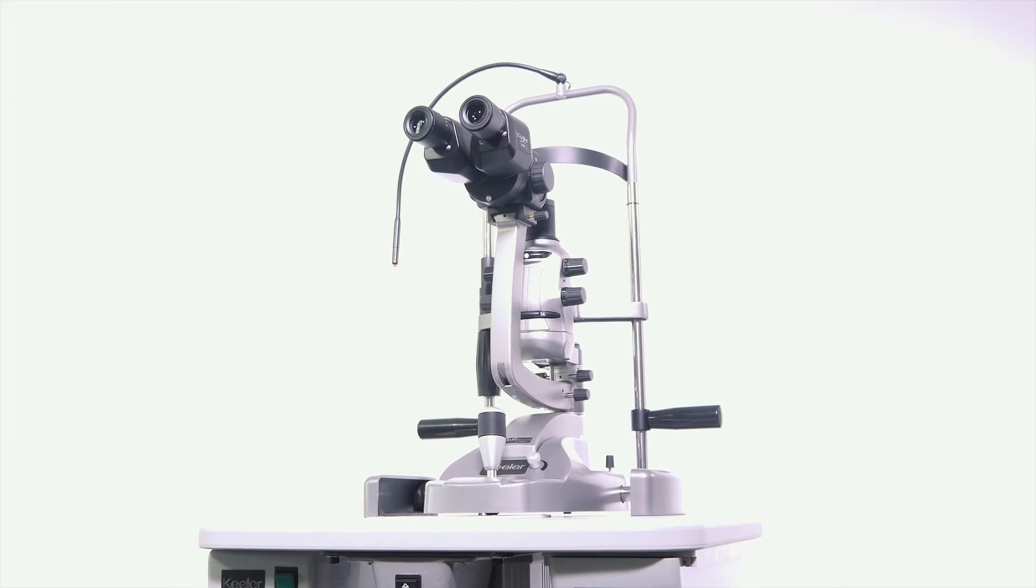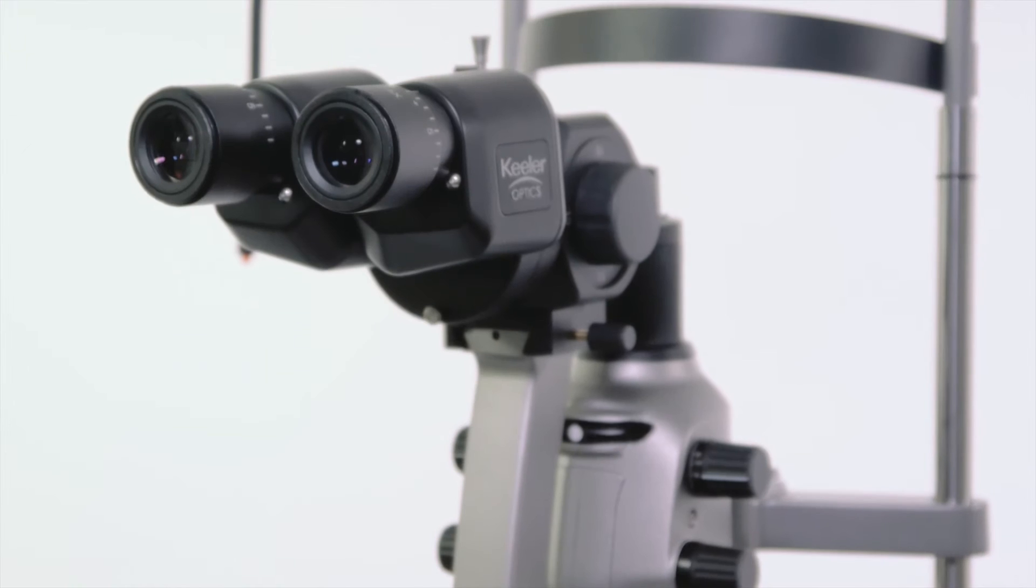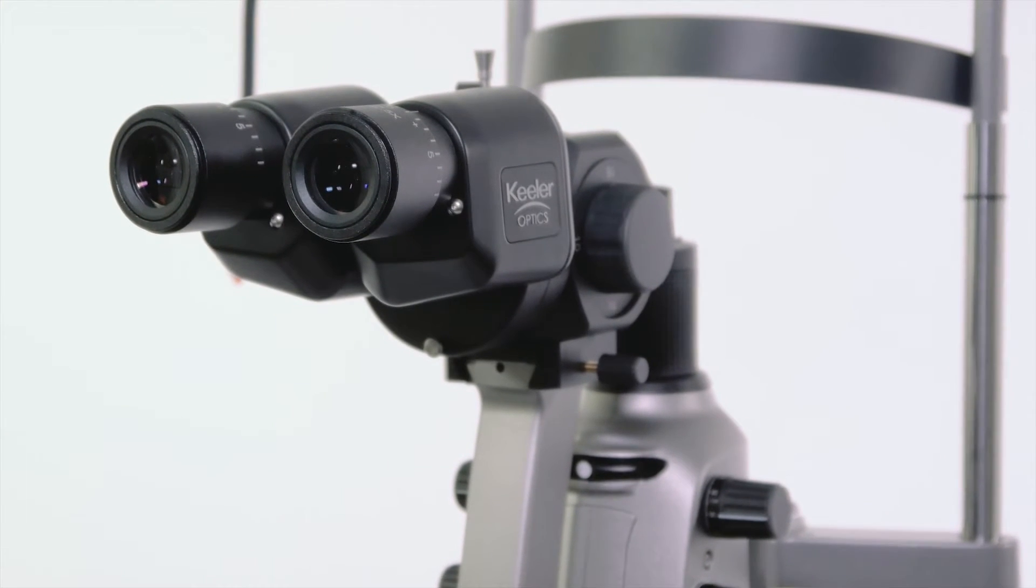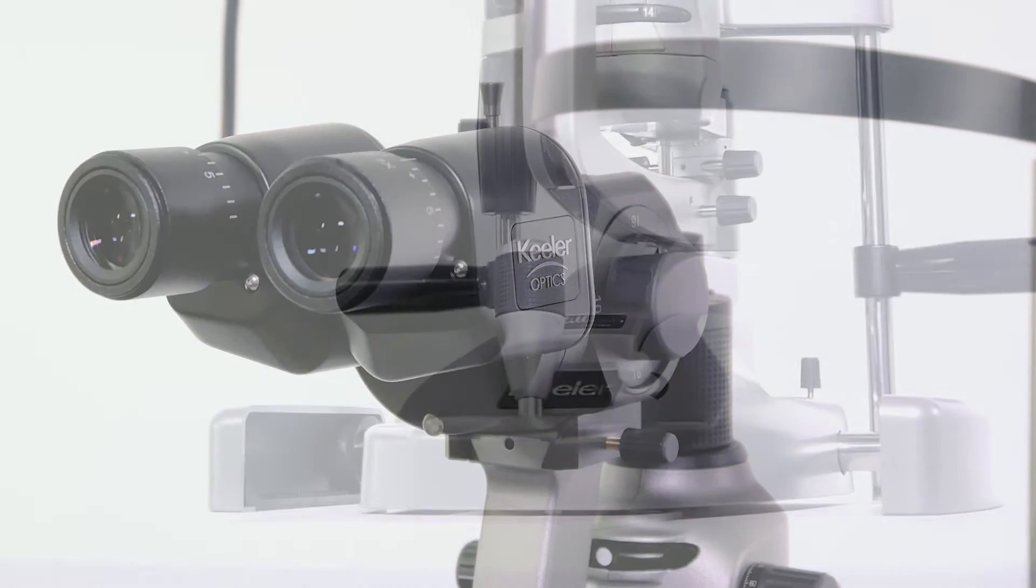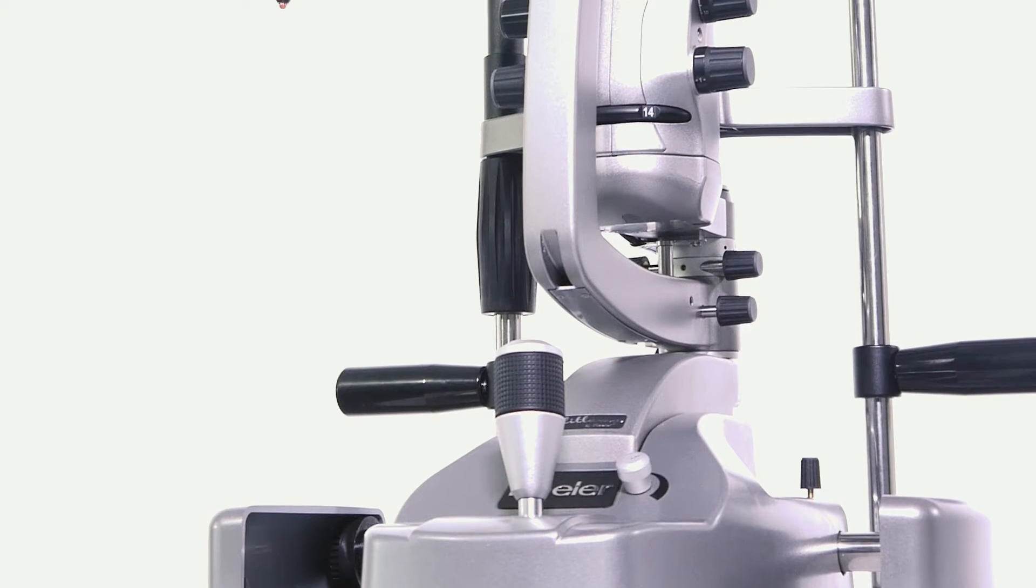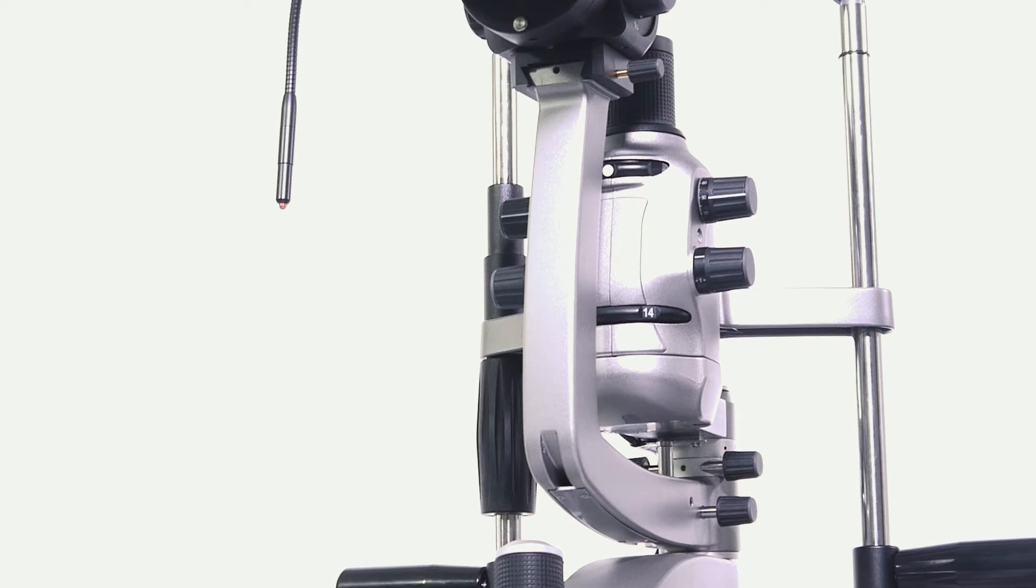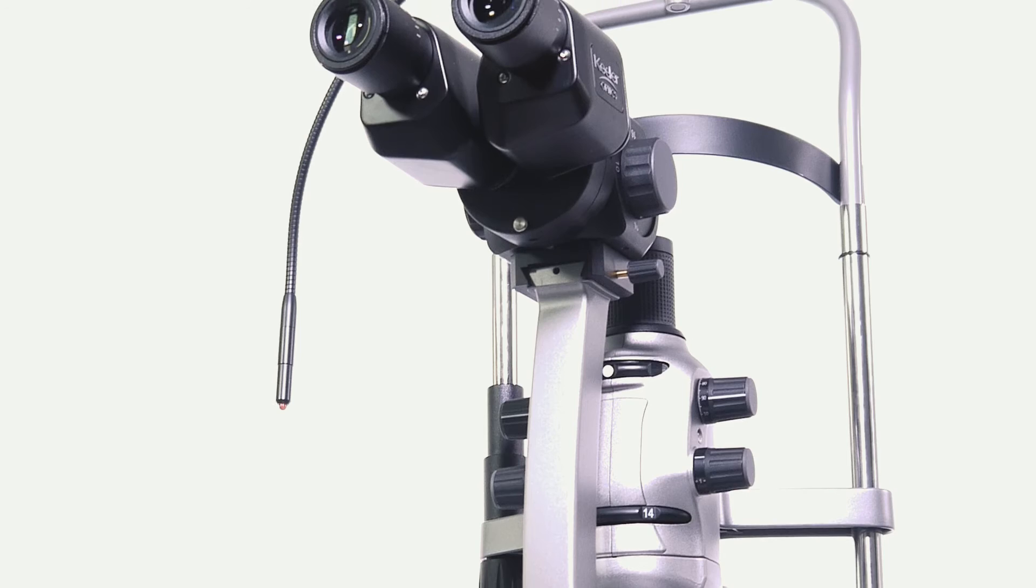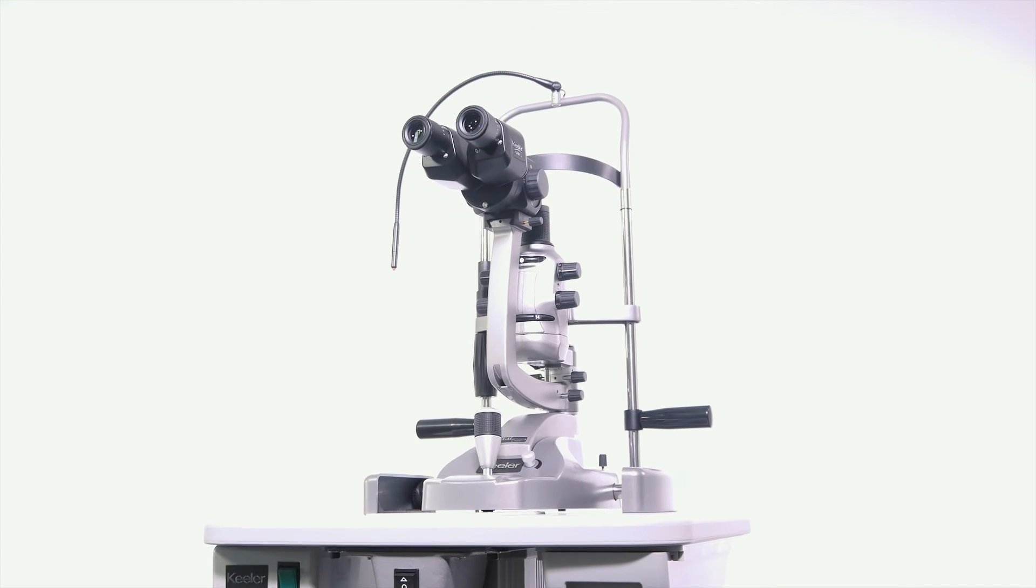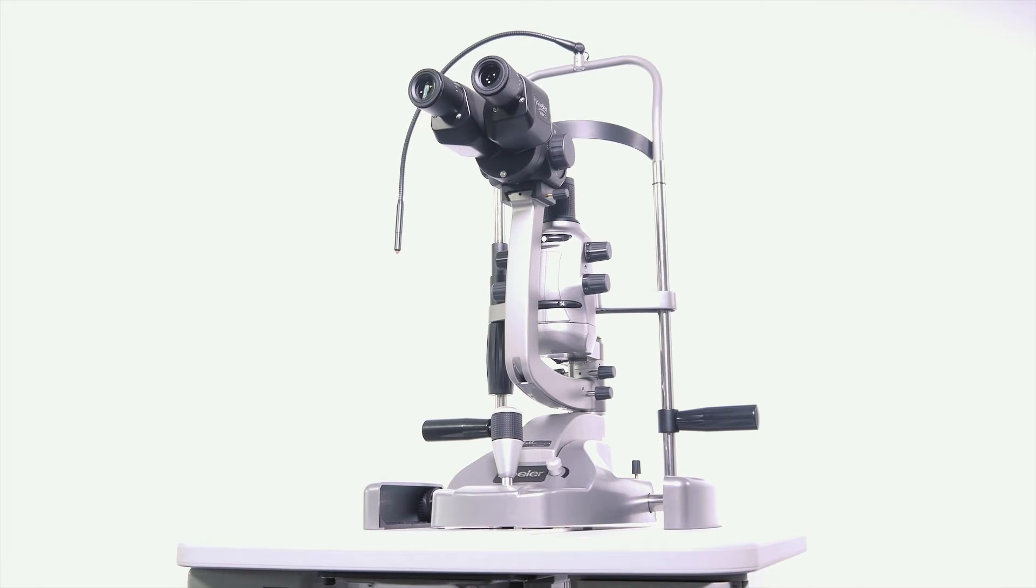The Q series slit lamps are the digital slit lamp series that are used for examination of the anterior segment and posterior segment of the eye as well as digital documentation of exams. The digital capabilities of the Q style slit lamps allow capture of patient images, notation and editing of images, and capture of video. This video will provide an overview of the features of the Q series and instructions on how to use it.